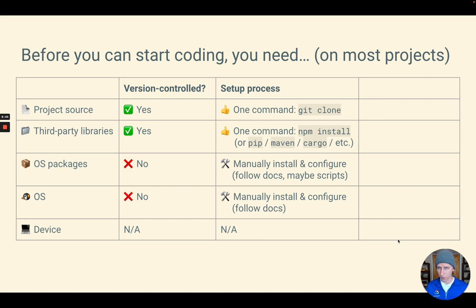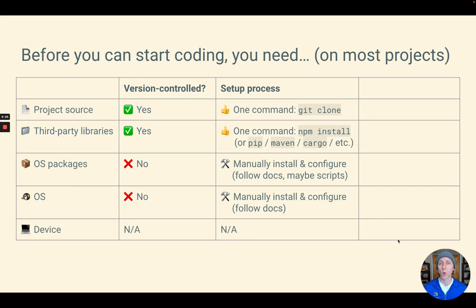Things that are usually not version controlled but necessary to code on a project are the packages on your operating system. A project may assume you have curl installed, or the correct version of Node. It probably won't pin that in the repo — instead it would be in the README that you need to install a specific version, and that version changes over time. It's a tricky situation when you need OS-level packages for local development, but those aren't NPM, PIP, Maven, or Cargo installable — you need more than what comes with a language ecosystem's package manager.